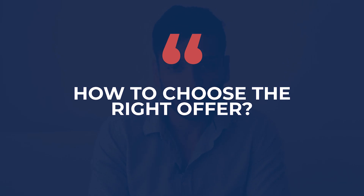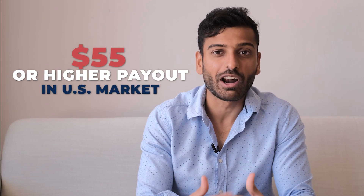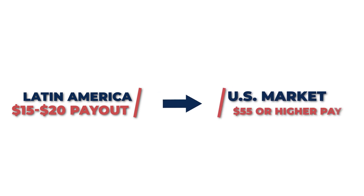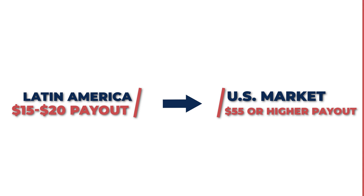You have to choose offers with the right payout so you can actually be profitable. We recommend choosing affiliate offers that have at least a $55 payout or higher in the US market. In other geographies it can be lower since competition is less — for example, in Latin America you can go with a $15 to $20 payout as your CPMs are going to be much lower.